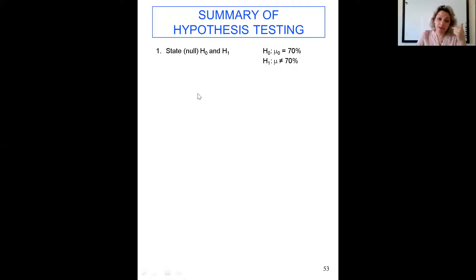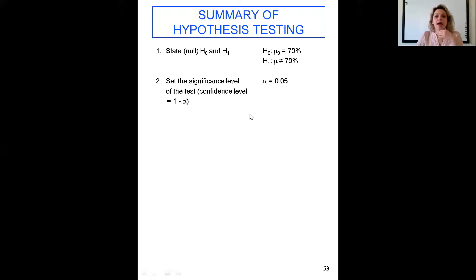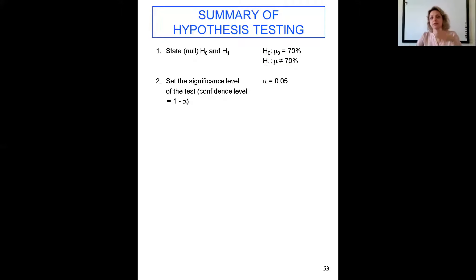In second-year stats, step two was defining the null hypothesis and step three was defining the alternative hypothesis. In this advanced stats course, we combine those three steps into one: state the null and alternative hypothesis. For example, the null hypothesis might be that mu equals 70%, and the alternative is that mu is not equal to 70%, making it a two-sided test. Then we set the significance level, which is the same as alpha.